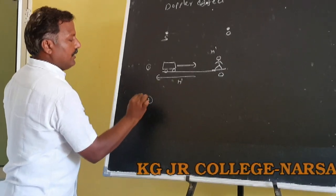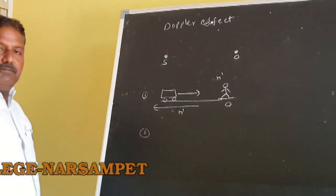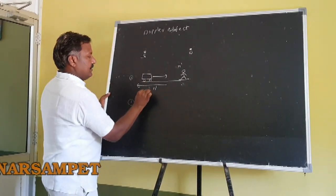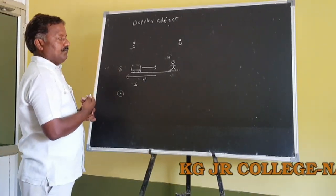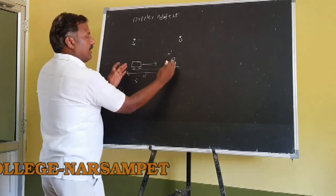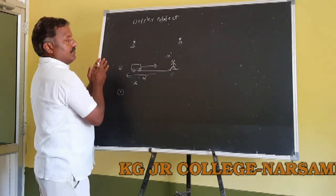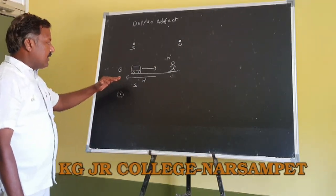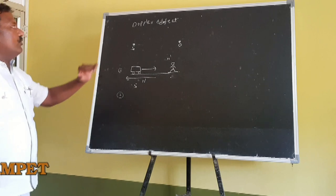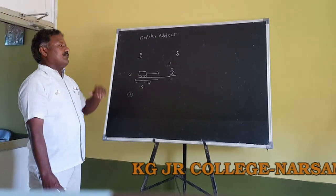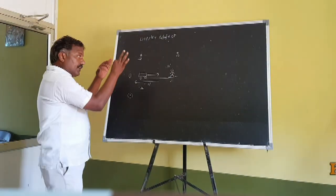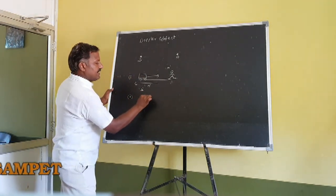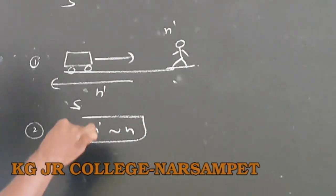The second example: suppose the source is at rest and can produce sound. If the observer approaches the source, frequency increases. If the observer moves away from the source, frequency decreases. These both are the best examples of the Doppler effect. So what is the Doppler shift?